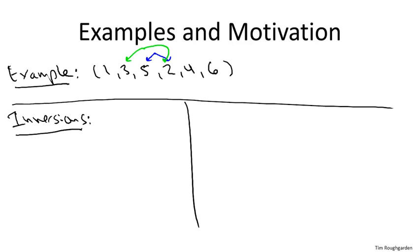There's three and two, for example. Those are out of order. And five and four are also out of order.